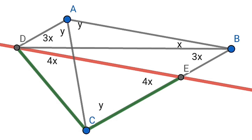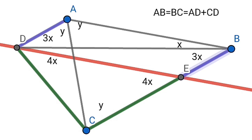So the line CE is equal to CD. Again, ADBE is a parallelogram, so BE is equal to AD. Therefore BC is equal to CD plus AD, that is AB is equal to BC, which is equal to AD plus CD.